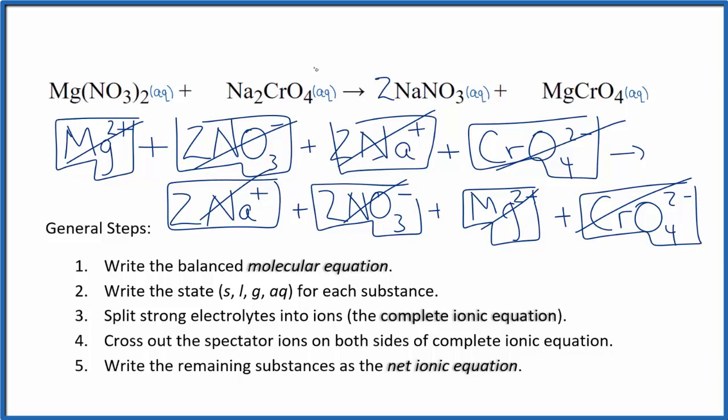You can see everything's crossed out. That means that nothing has really changed. All of these ions are present in the beginning here and they're present in the end, so there's no reaction for this equation.